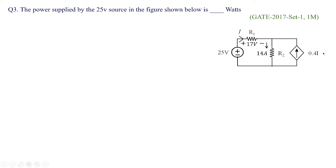In the next problem which was asked in GATE 2017 for set 1 for 1 mark, we need to find out the power supplied by 25 volts source in the figure shown below in watts. Please observe the problem carefully. You have 0.4 I and you have a diamond shape box with current arrow mark, so this becomes current controlled current source. How to solve this problem? Let us assume voltage V at the node like this.